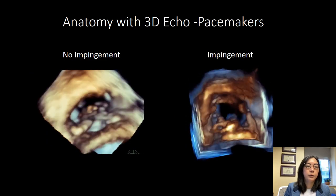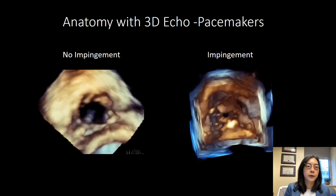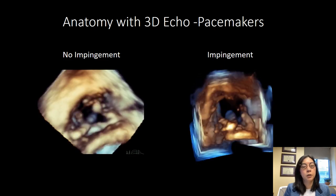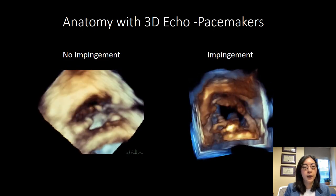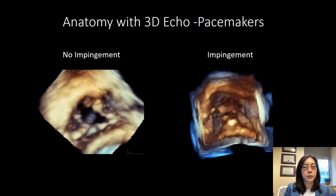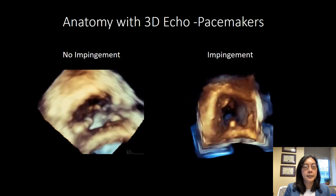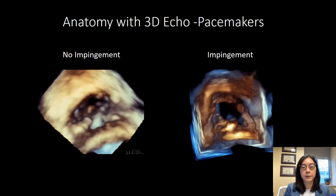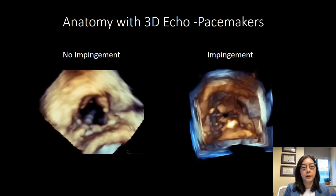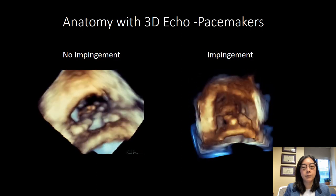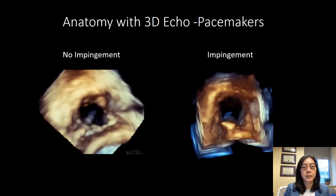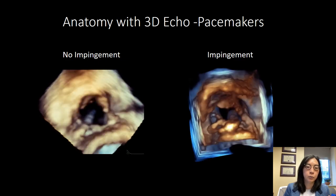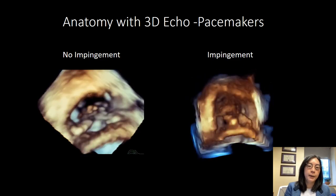One of the most valuable uses of 3D echocardiography has been identifying the role of pacemakers in the development of tricuspid regurgitation. In the image on the left, viewed from the right ventricle looking up at the valve, the pacemaker lead is going between the septal and the posterior leaflets in the commissure — it's not affecting coaptation and the leaflets come together with no gap seen during systole. In the image on the right, the pacemaker lead is impinging on the septal leaflet, and during systole there's a gap between the anterior and posterior leaflet and the septal leaflet, because the septal leaflet is unable to move forward to coapt with the anterior and posterior leaflets.